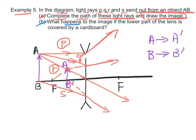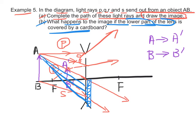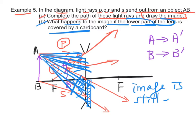Part B: What happens to the image if the lower part of the lens is covered by cardboard? Light rays from object AB cannot pass through the lower part of the lens. However, there are still light rays from AB that can pass through the upper part of the lens. Only the amount of light passing through the lens decreases. Therefore, the image still exists, but the image will be dimmer than before.